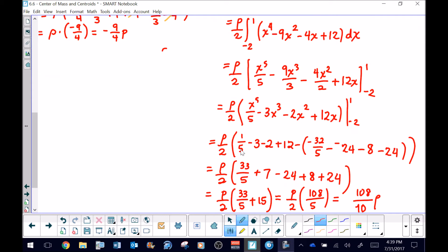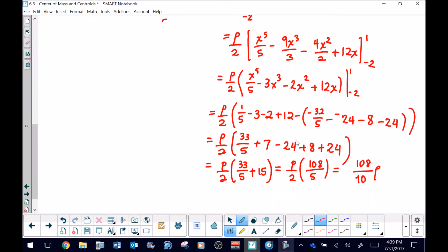Once I start simplifying, I notice that the one-fifth and the positive 32 fifths were going to produce 33 fifths. I got my 7 by combining these three integers, and then the rest is just distributing the negative into these last three terms. Three negatives make a negative. Double negative of that 8 is a positive, double negative for that negative 24 is a positive. Luckily the 24s cancel. 15 and the 33 fifths that's left makes 108 fifths. When I combine my 5 and 2 by multiplication, I have 108 over 10 times ρ.